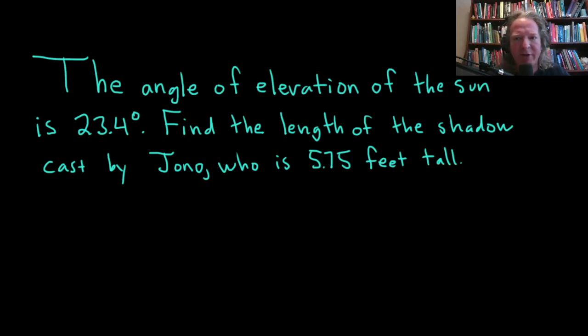The angle of elevation of the Sun is 23.4 degrees. Find the length of the shadow cast by Jono, who is 5.75 feet tall. Let's go ahead and carefully work through this solution.